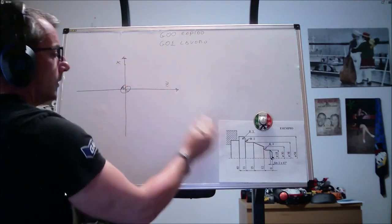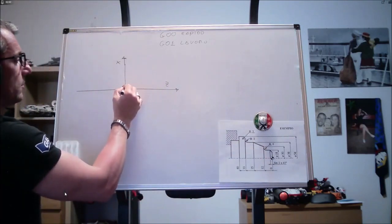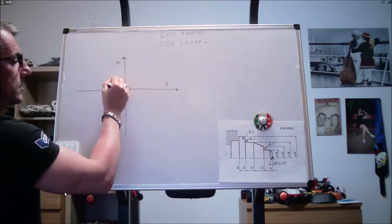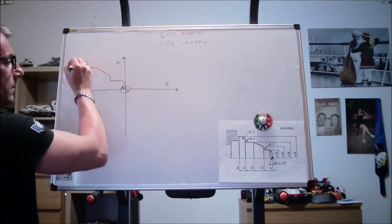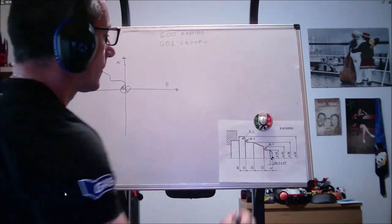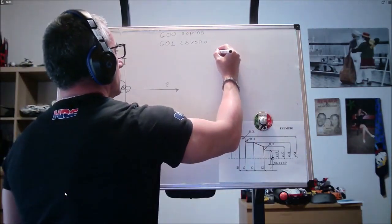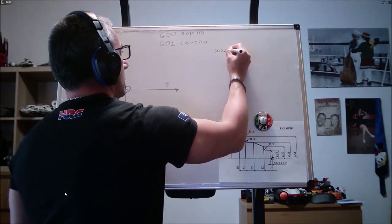Questo è il nostro sistema di assi cartesiani, X, Z, come vedete l'origine è qua, e il mio pezzo si svolge qua. La prima quota che dobbiamo raggiungere è X 0, Z 0.